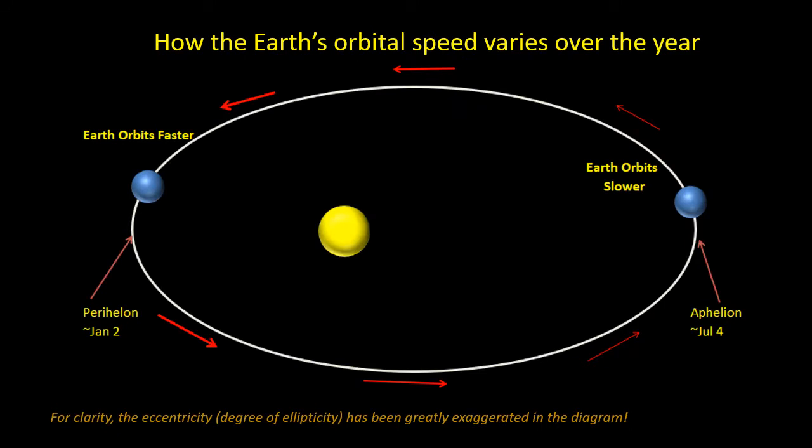Because the Earth's orbit is elliptical, its distance from the Sun varies during the year. It is at its closest in early January and furthest away in early July. When the Earth is closest to the Sun it moves more rapidly in its orbit, and when it's furthest away it moves more slowly.